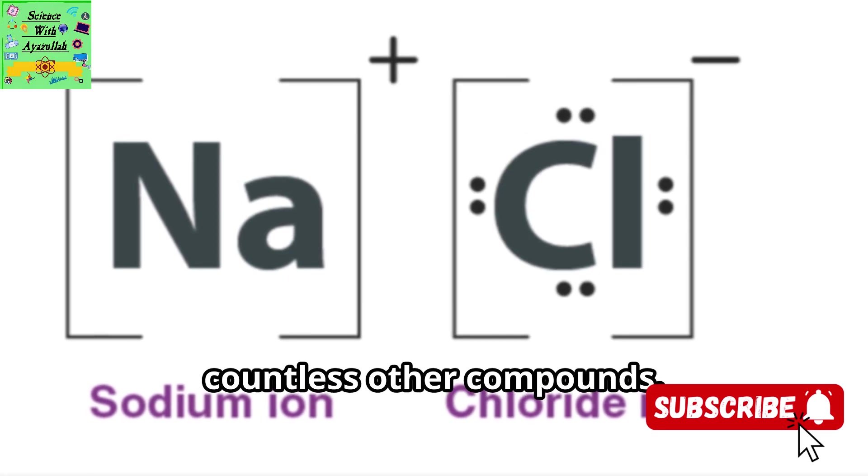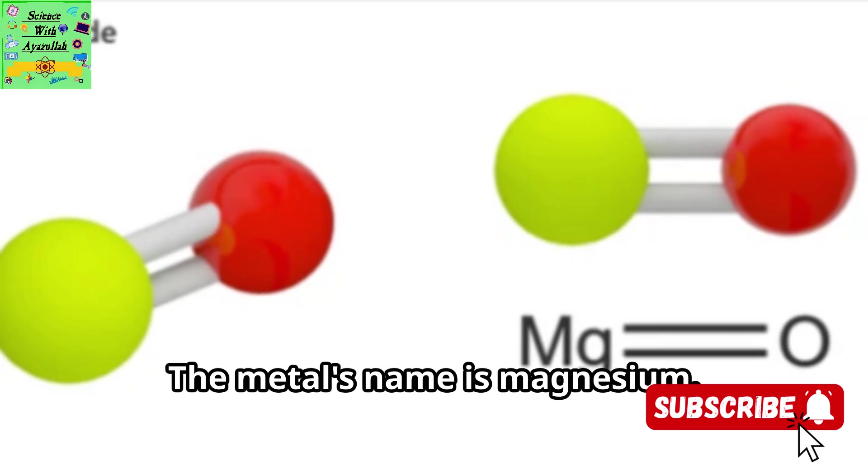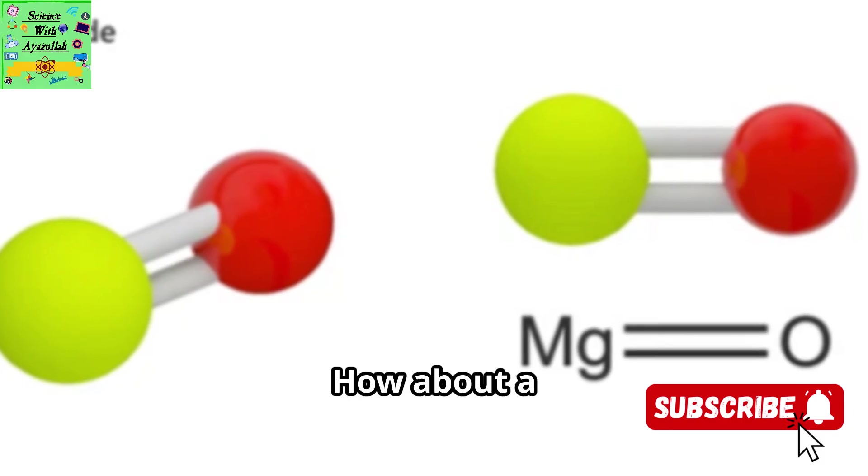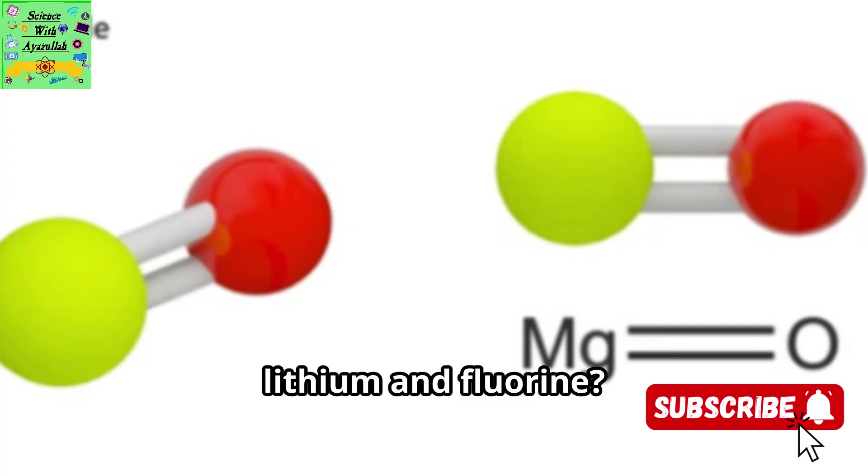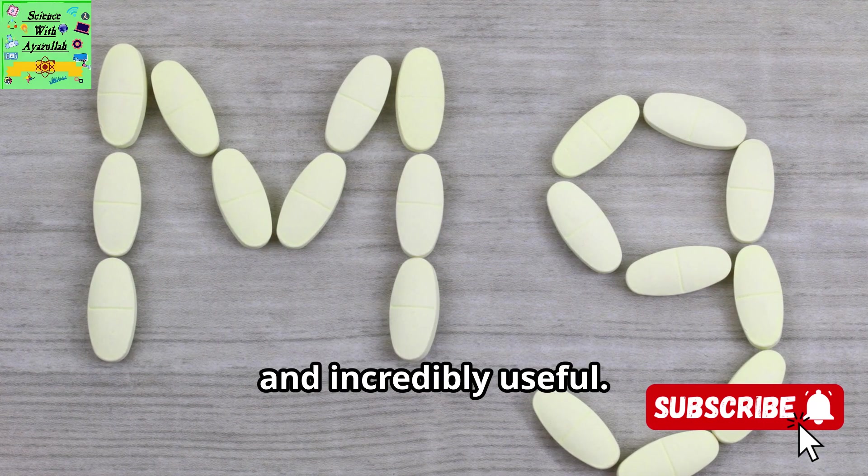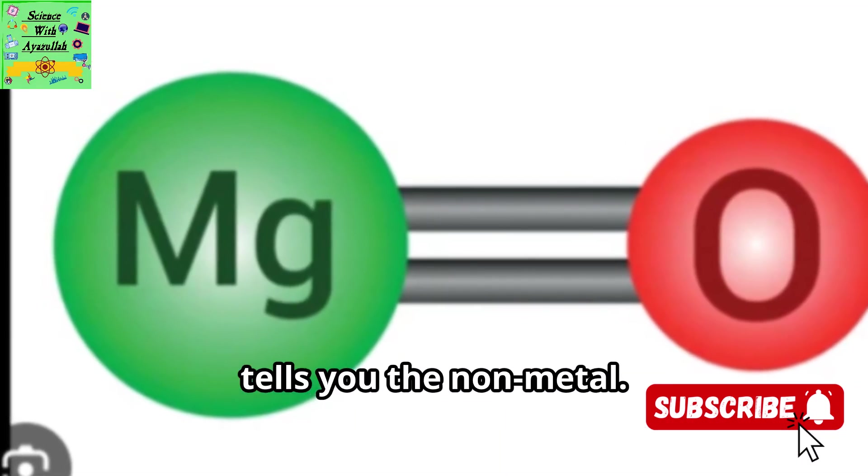This rule works for countless other compounds. Take a compound made of magnesium and oxygen. The metal's name is magnesium. The nonmetal oxygen becomes oxide. So, the full name is magnesium oxide. How about a compound with lithium and fluorine? That would be lithium fluoride. The pattern is simple, predictable, and incredibly useful. The first word tells you the metal, and the second word with its IDE ending tells you the nonmetal.